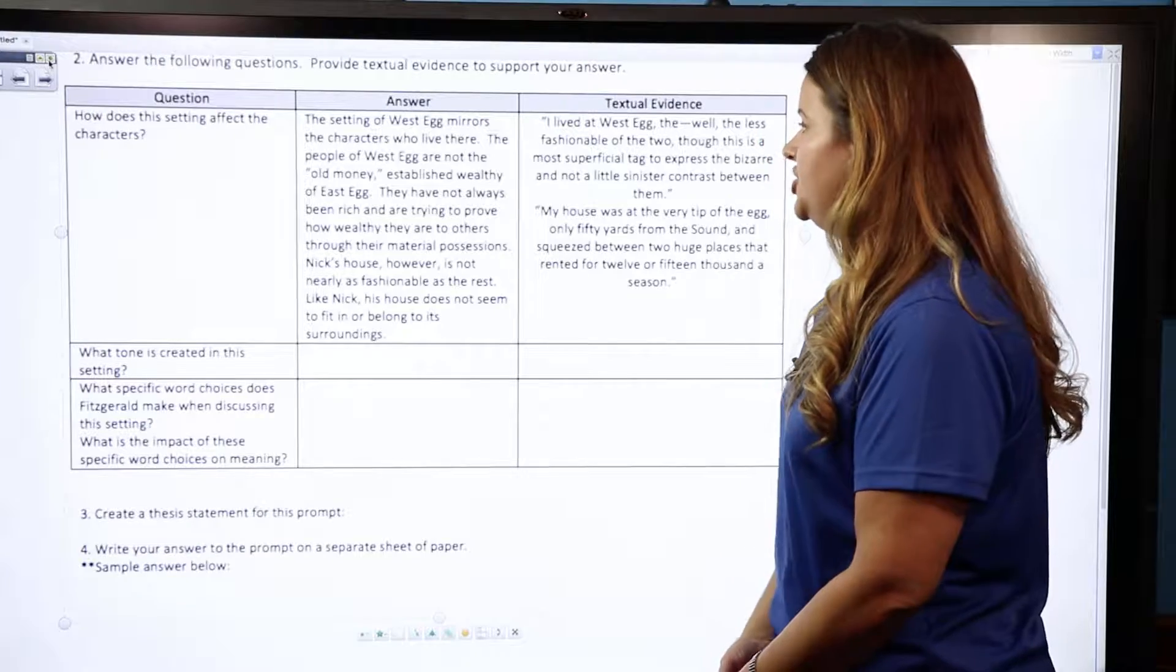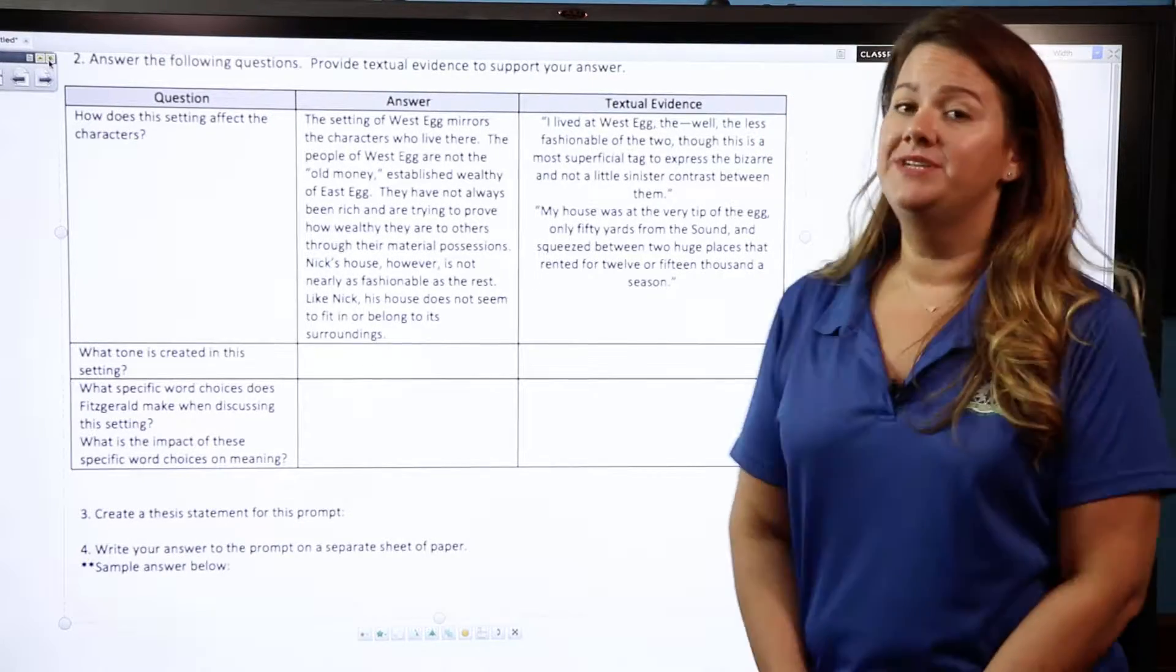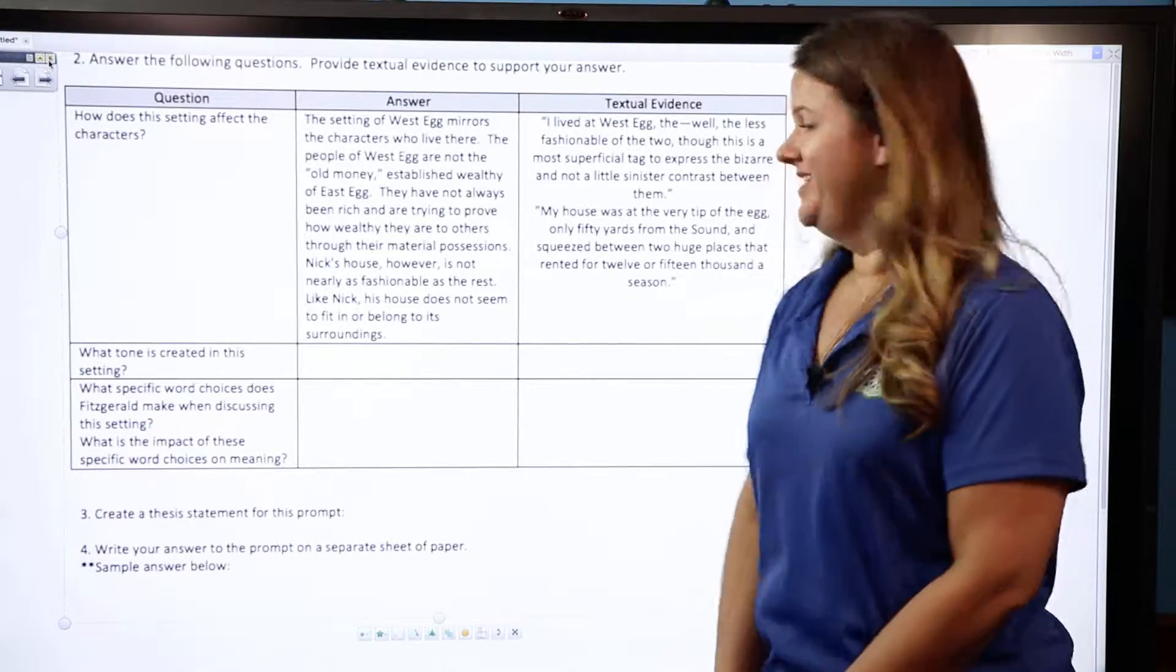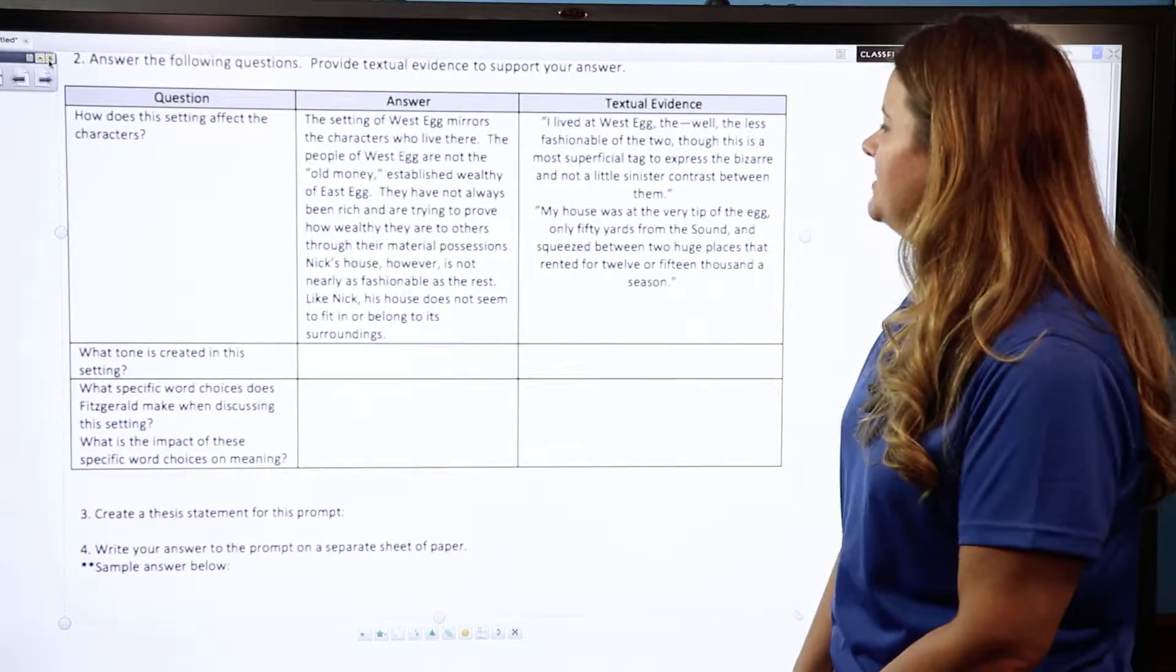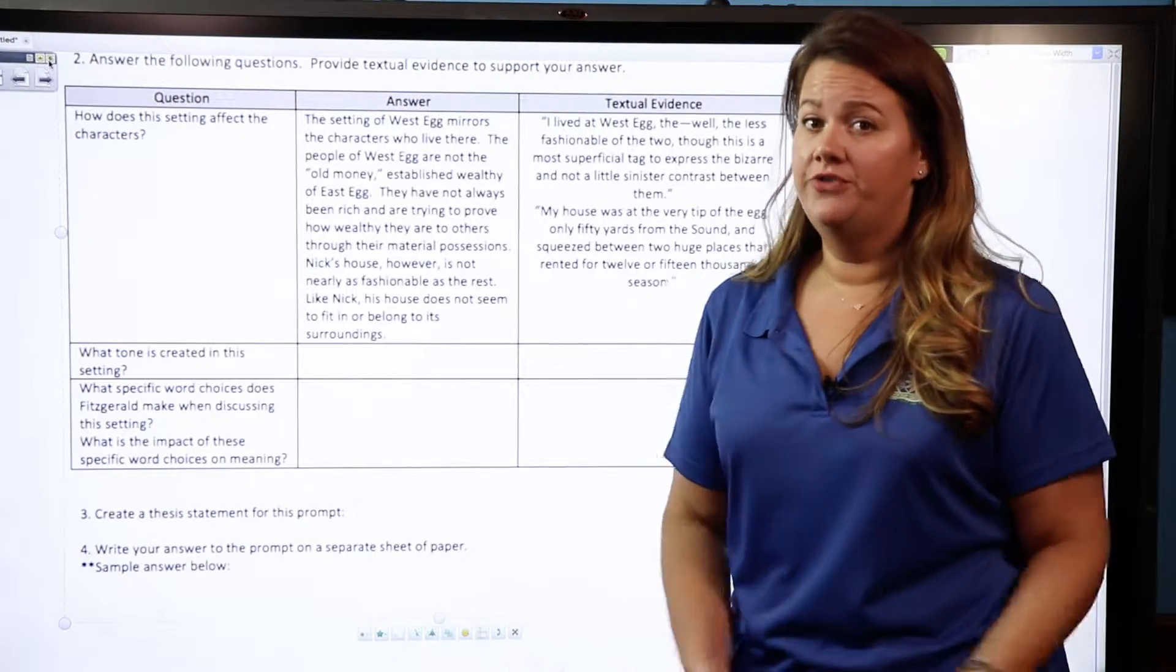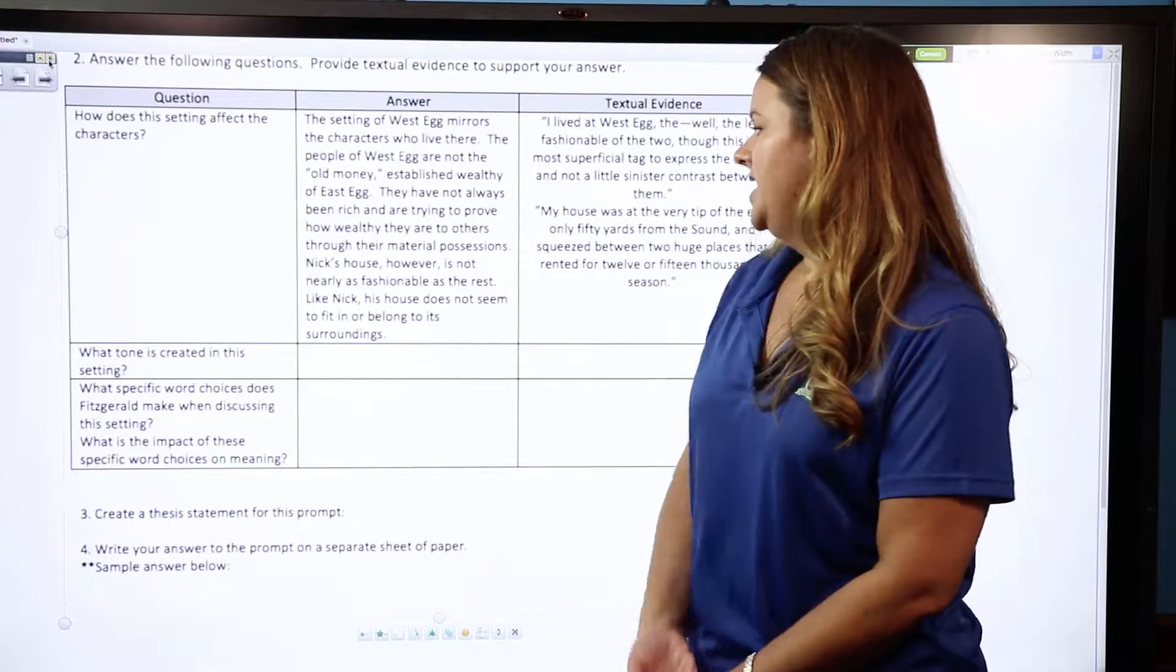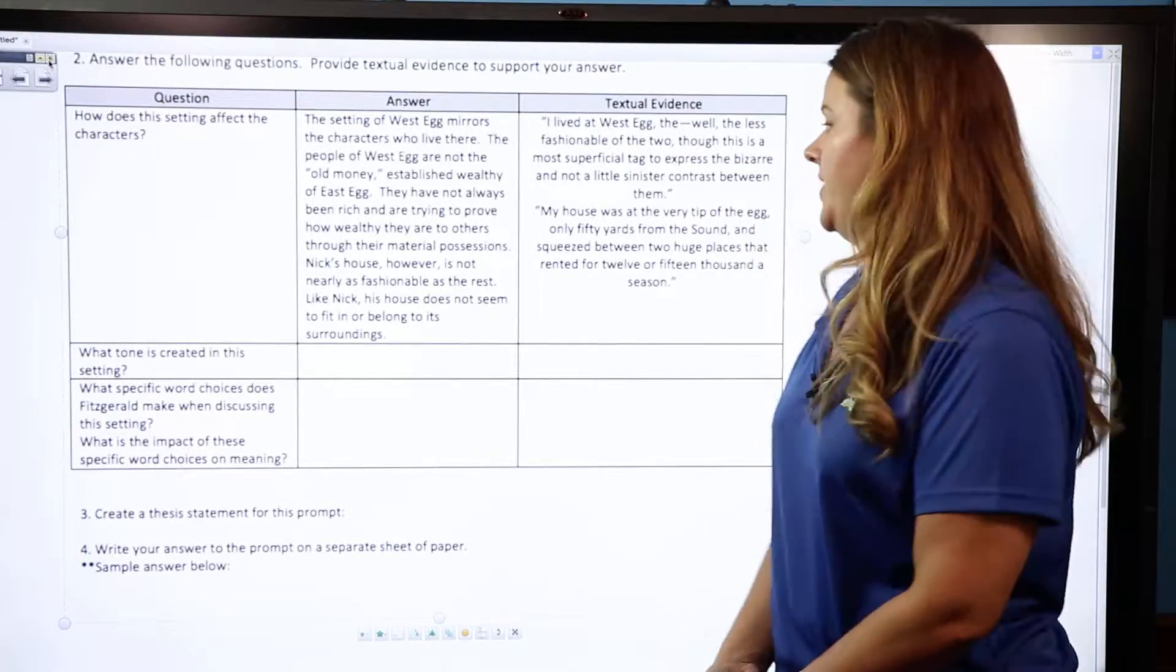The people of West Egg are not the old money, established wealthy of East Egg. That's one of the big contradictions we see: East Egg is old money, West Egg is new money like Gatsby. These people haven't always been rich, and they are trying to prove how wealthy they are to others through their material possessions or elaborate parties, even.